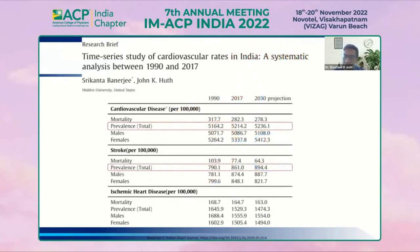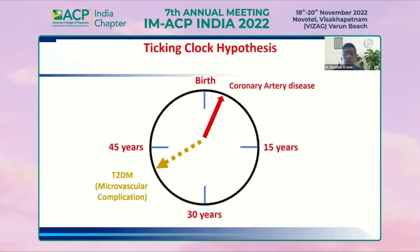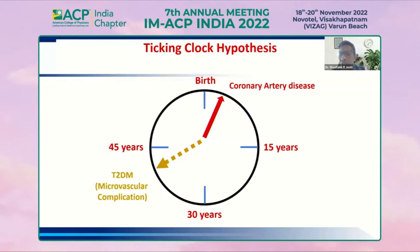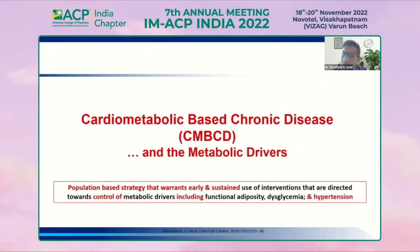The macrovascular clock of heart disease starts ticking very early. Atherosclerotic plaques start at the age of 6 and 7, and by the time diabetes becomes overt, macrovascular complications have already set in. By the time the macrovascular clock starts ticking, there is already de novo diabetes which is overt and obvious. Therefore, the metabolic driver of cardiometabolic-based chronic disease needs a strategy for early interventions.